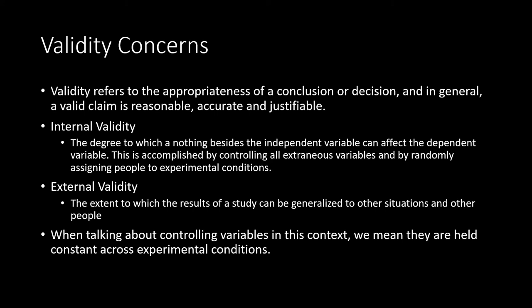On the other side, there is external validity, which refers to how well the results from a study can be generalized to other situations or other people — for example, whether people in Japan will operate in the same manner as people in the United States. When we talk about controlling variables, we mean they are held constant across experimental conditions. For example, if I wanted to see how quickly different age groups can eat an ice cream bar, I would need to keep the temperature in those rooms constant, because in warmer rooms the ice cream would melt faster, causing people to naturally try and eat it before it dripped all over their hands — this could provide an alternative explanation for the speed at which people eat ice cream, compromising internal validity.